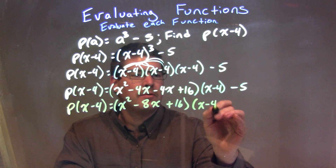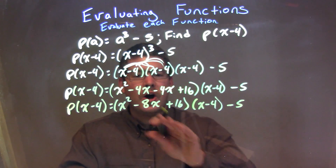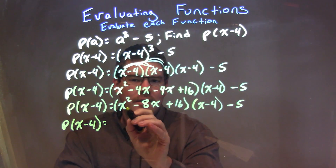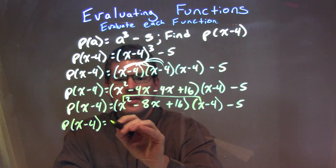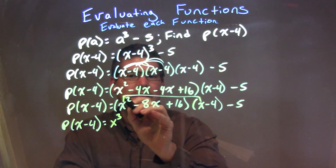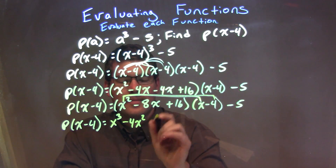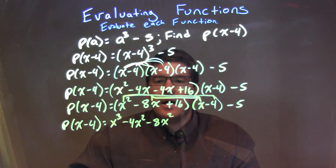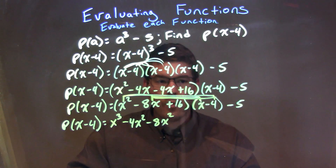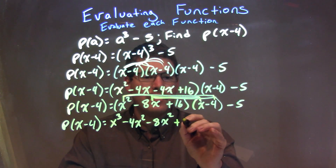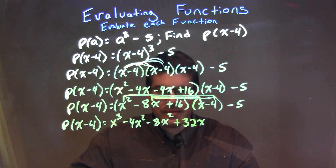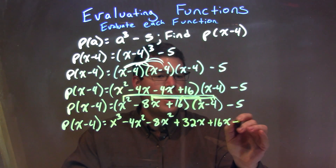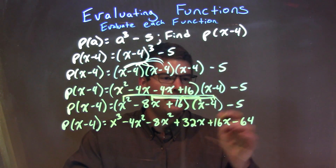We're multiplying that by x minus 4, and then we have minus 5. All parts of my first parenthesis are multiplied by all parts of my second parenthesis. So, p of x minus 4 is equal to: x squared times x is x to the third; x squared times negative 4 is negative 4x squared. Then negative 8x times x is negative 8x squared; negative 8x times negative 4 is positive 32x. Then 16 times x is 16x, and 16 times negative 4 is negative 64. We bring down the minus 5.